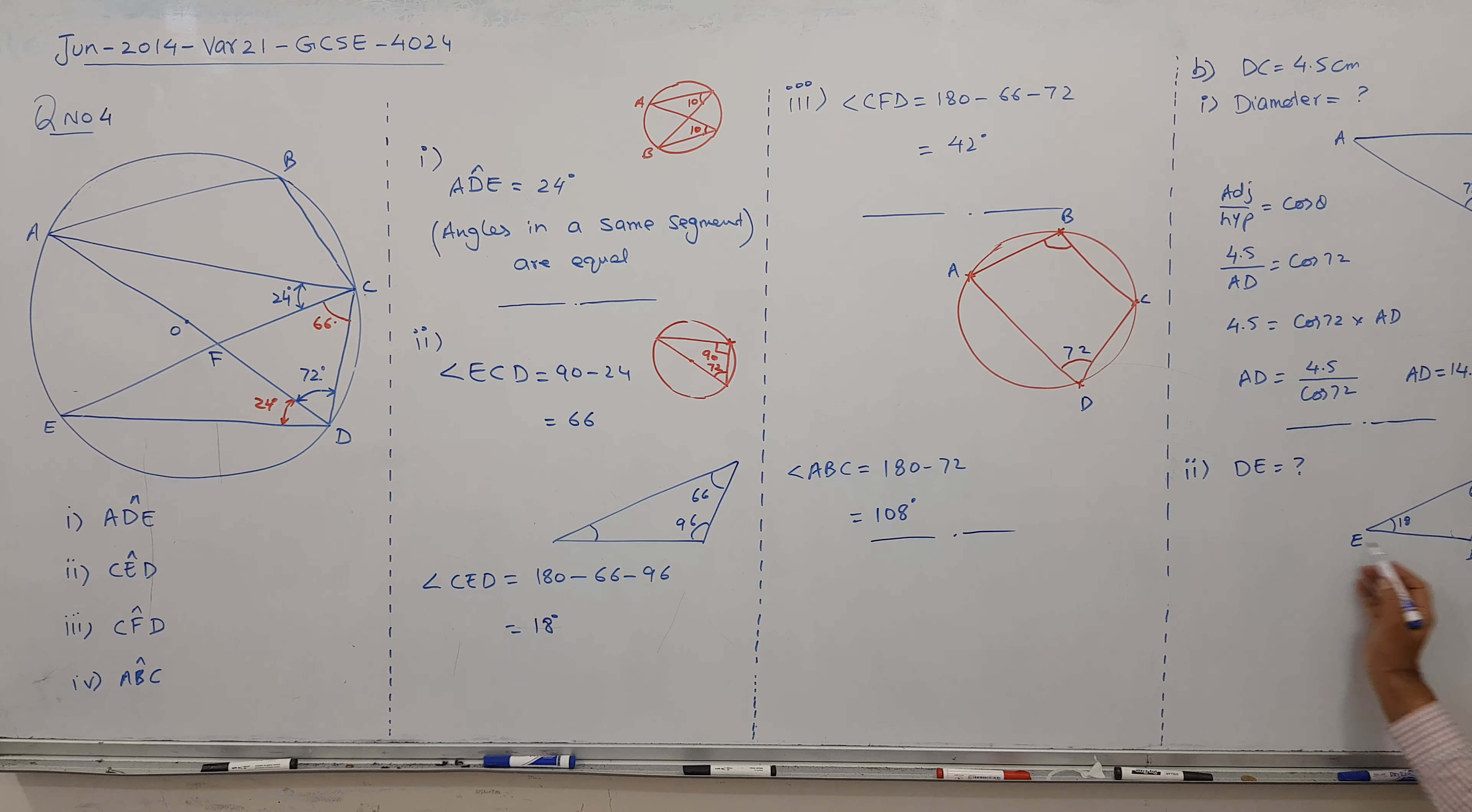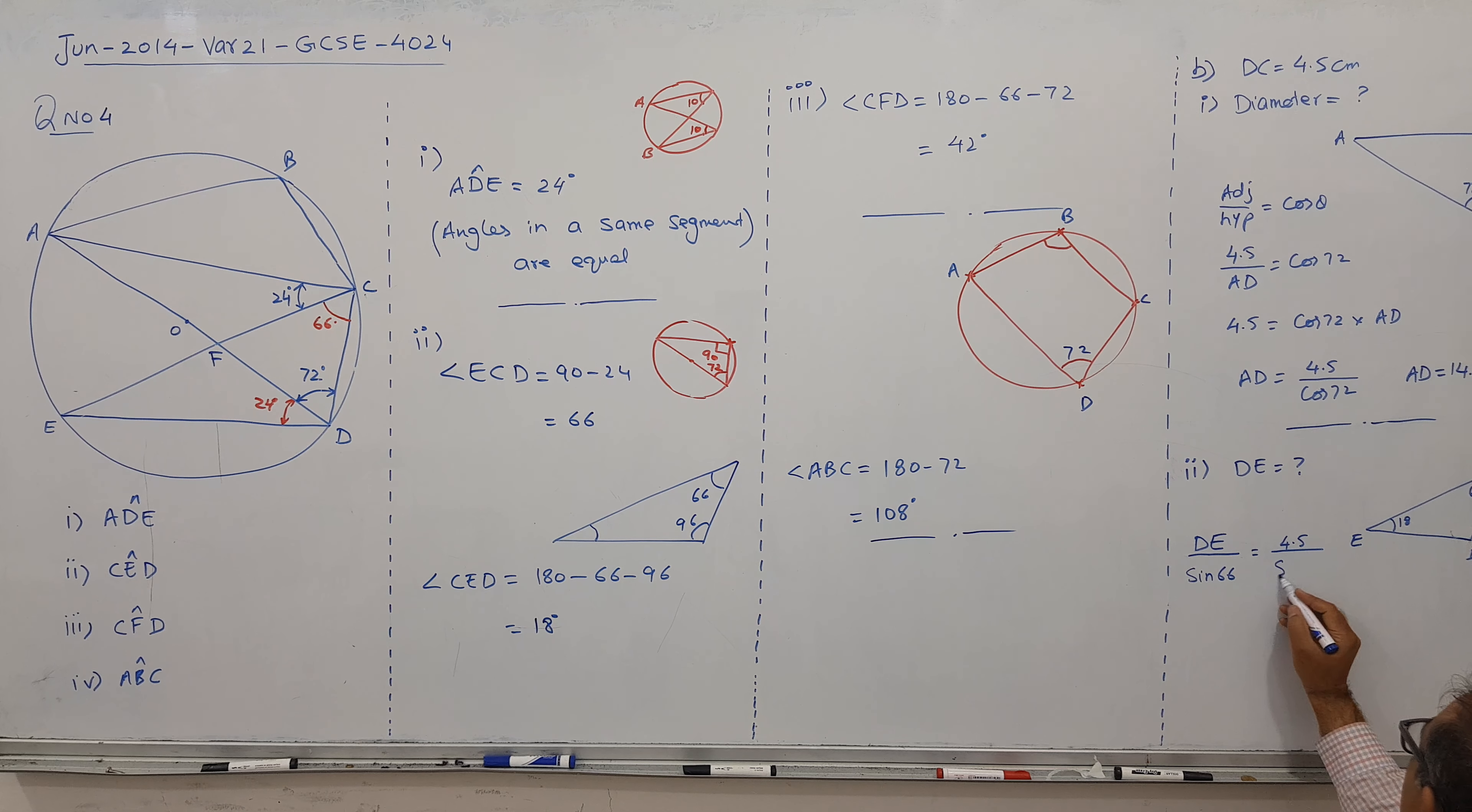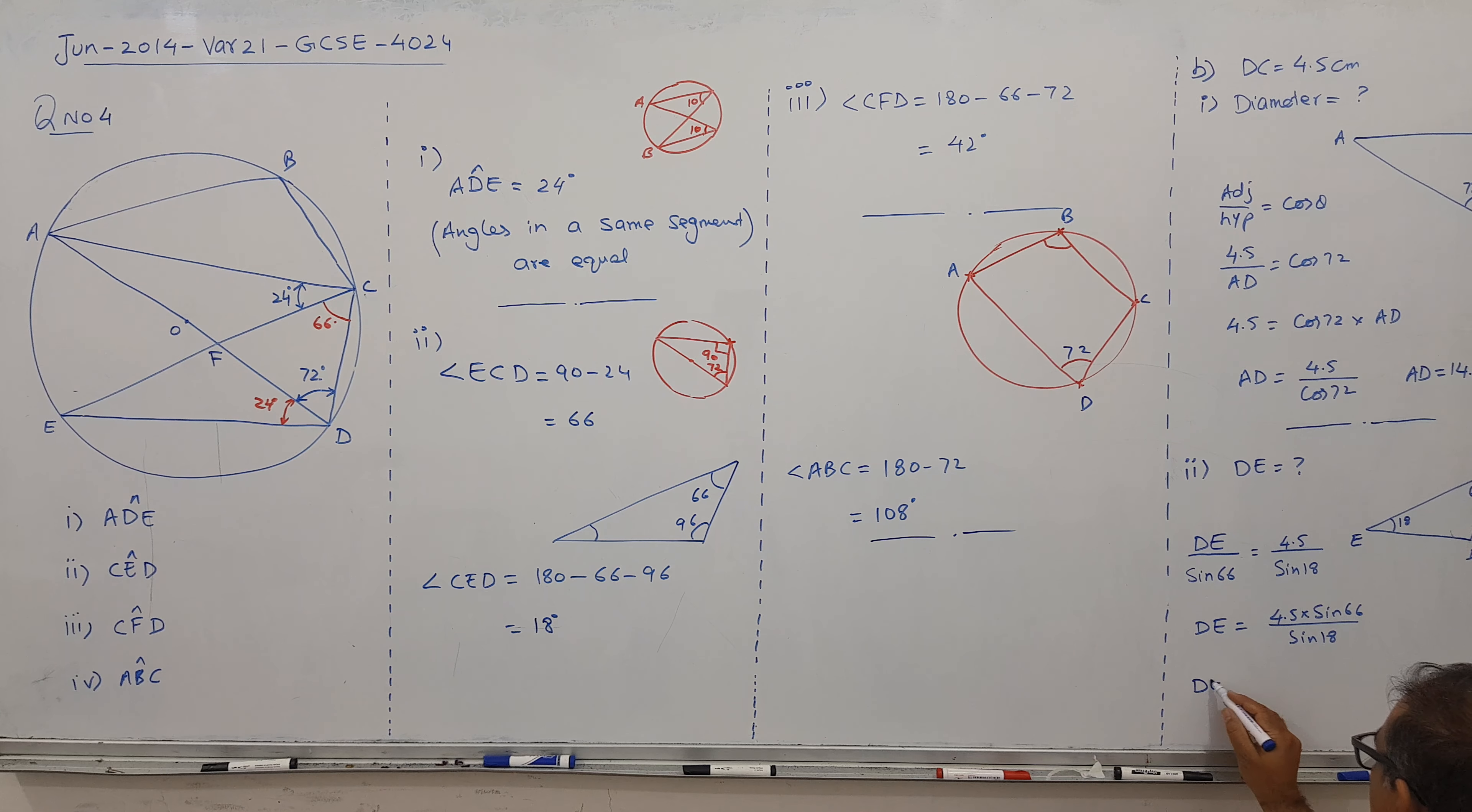I can use sine rule. DE divided by sine of 66 equals 4.5 divided by sine of 18. So DE equals 4.5 times sine 66 divided by sine 18, giving us 13.3 centimeters. We have finished our question, and that's it.